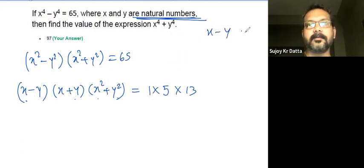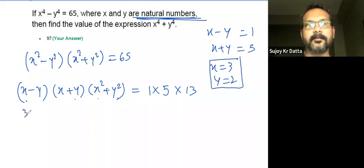If x minus y is 1 and x plus y is 5, we end up getting x equals 3 and y equals 2. Just to verify: 3 minus 2 is 1, 3 plus 2 is 5, and 9 plus 4 is 13.